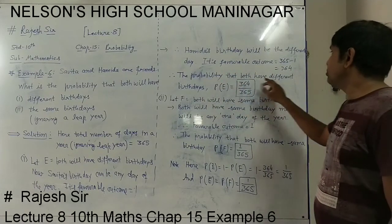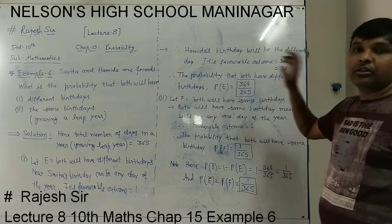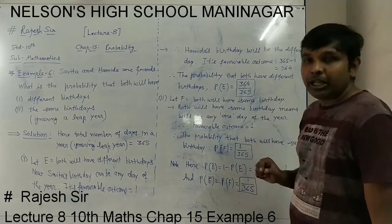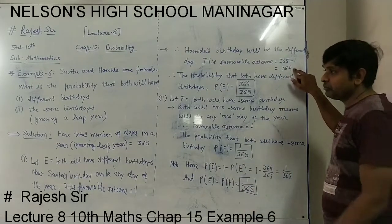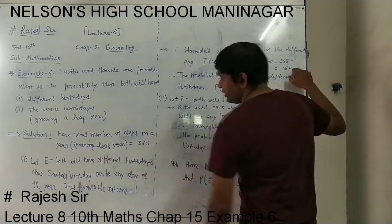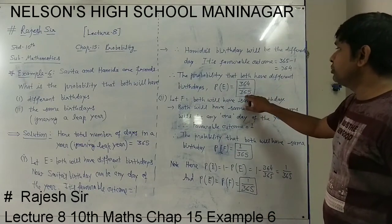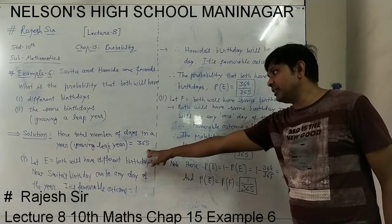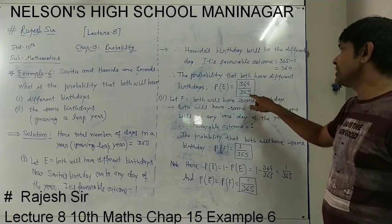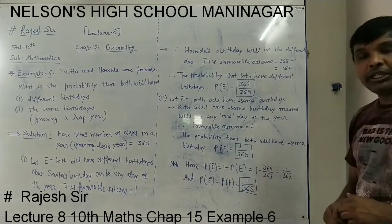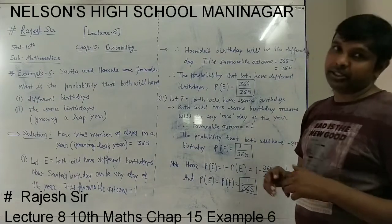Now the probability that both have different birthdays: by definition, the number of favorable outcomes for E is 364, and the total number of days in the year is 365. So P(E) = 364/365. This is the probability that Savita and Hamita will have different birthdays.